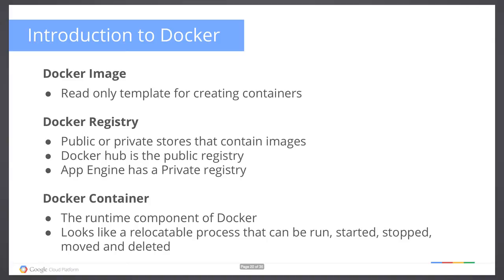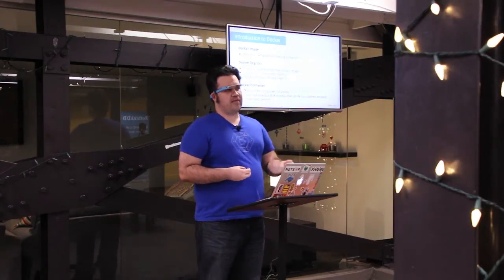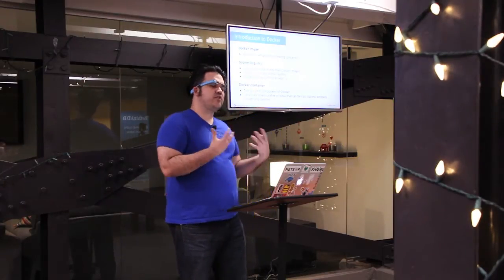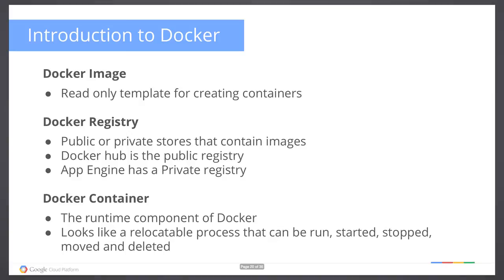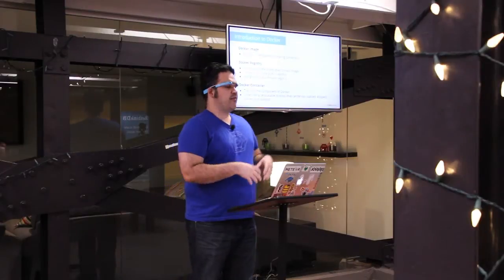A Docker image is your read-only template — the image that will run your stuff. The registry is a public or private store containing a series of images: Ubuntu, CentOS, BusyBox. The Docker Hub is public. App Engine has its own private repository, and you can define your own images on Google Cloud Storage which gives you access to a fast fiber backend. When you deploy a container you're not waiting from some outside endpoint — you stay within the infrastructure for speed.